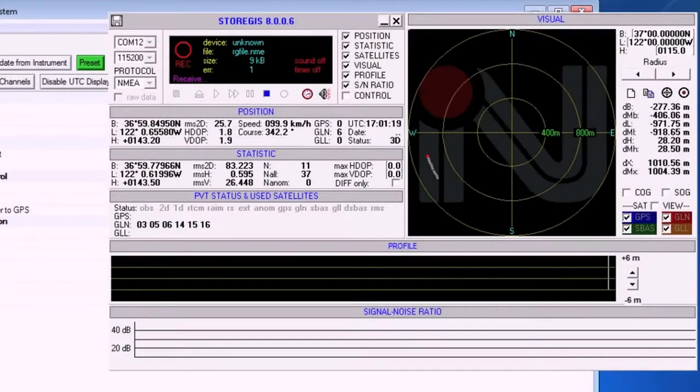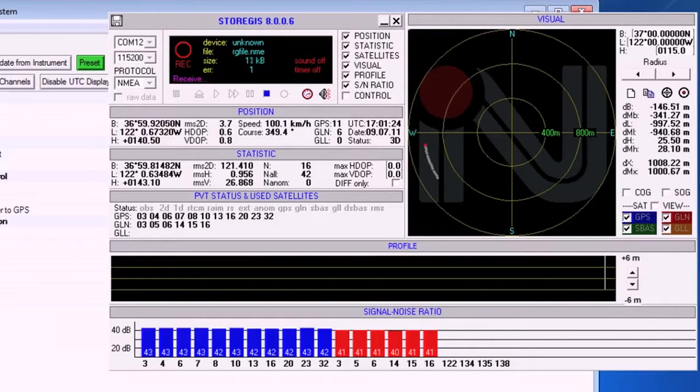Let's look at the software for our demo GNSS receiver. From a cold start reset, we can see the GPS and GLONASS satellites come into view as the receiver locks onto the signals. We can also see the simulated motion of the receiver as the scenario continues to play.